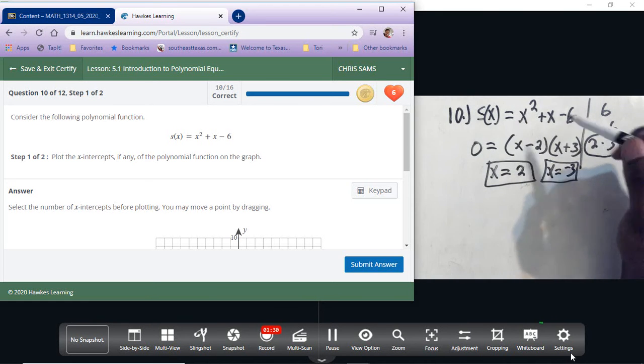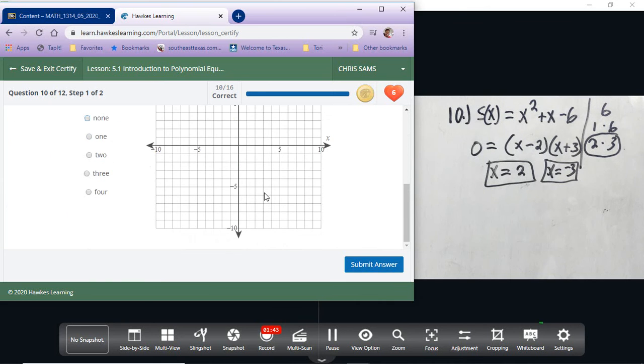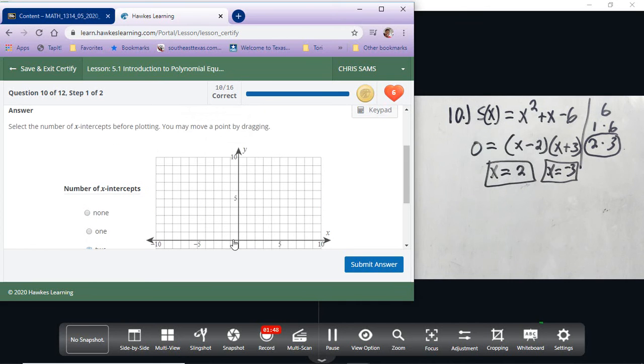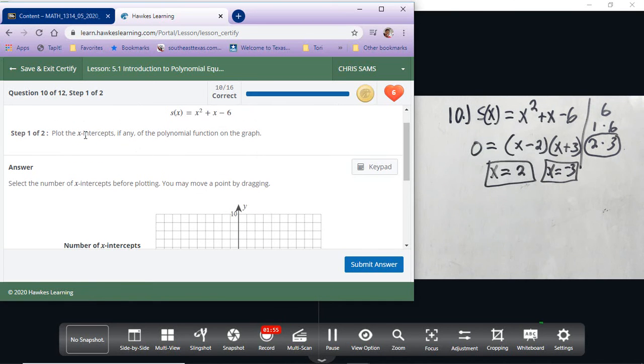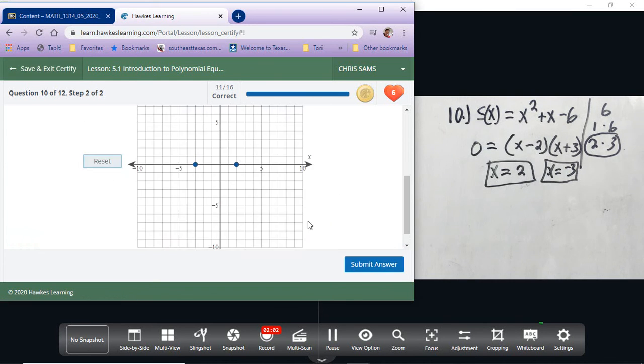We can just think of do the opposite sign. Sometimes you might have a number in front, so I'll show you the difference when we have that. Alright, so these are my x-intercepts: 2 and negative 3. So number of x-intercepts, there's 2, positive 2 and negative 3. So this is step 1 of 2, we're going to submit that.